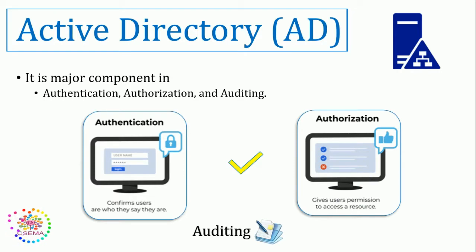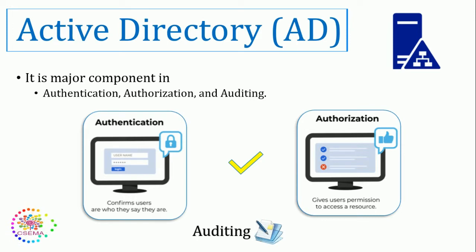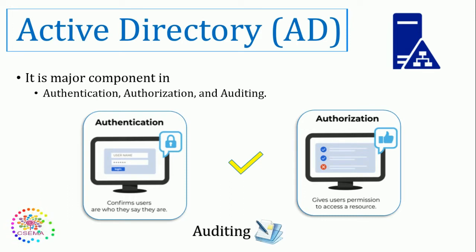Authentication basically confirms who the user says they are. Whenever we try to log in using our username and password, we enter them into the forms and provide our credentials to the system. The system authenticators do the checking — is this user correct or not? Once authentication is done, the next process is authorization. It's similar to when you try to enter a building — you have to provide your ID card; that's essentially the task of authentication.